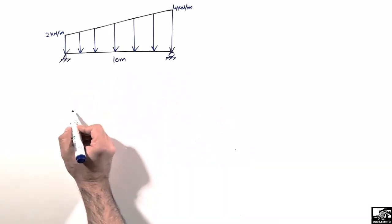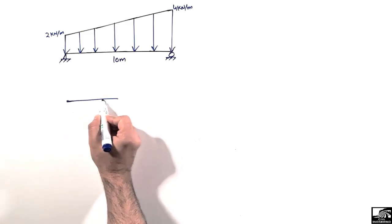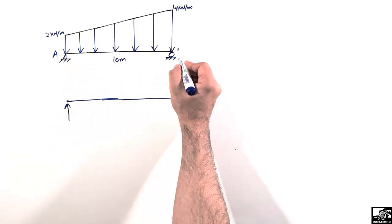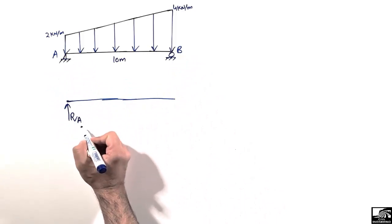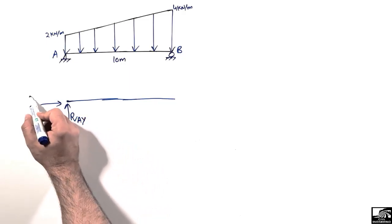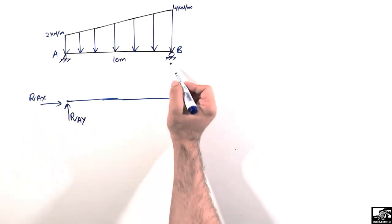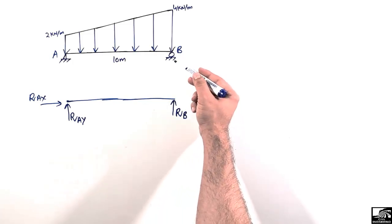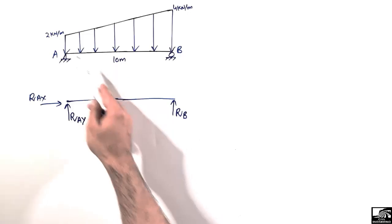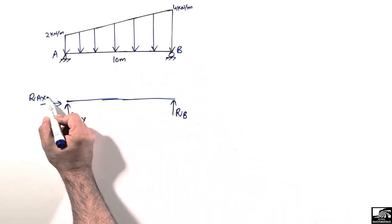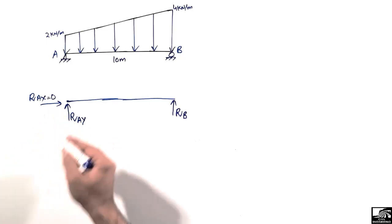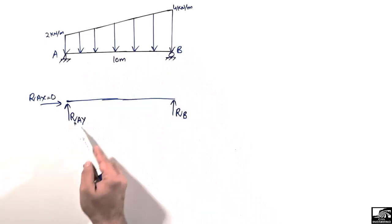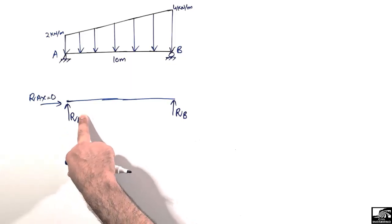We draw the free body diagram for this beam. This is a hinge support at point A, so it can take a vertical reaction RAy and a horizontal reaction RAx. Point B is a roller support, so it can only take the vertical reaction RB — it cannot take any horizontal reaction. Since there is no horizontal load acting on this beam, the horizontal component at the hinge support RAx is equal to zero.